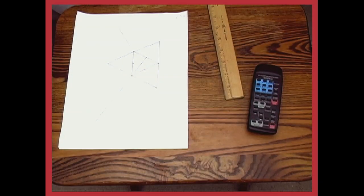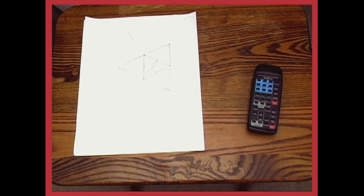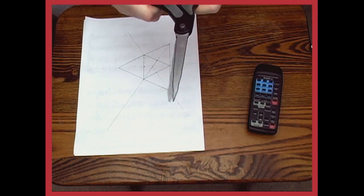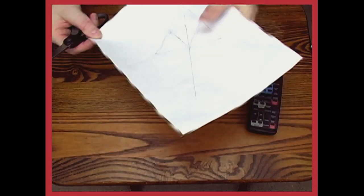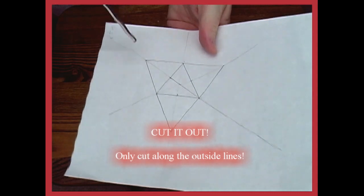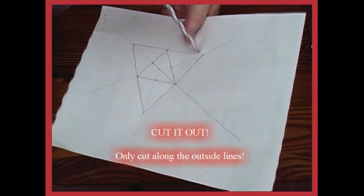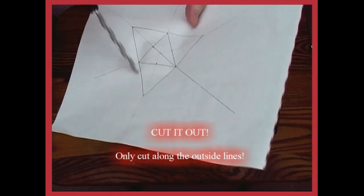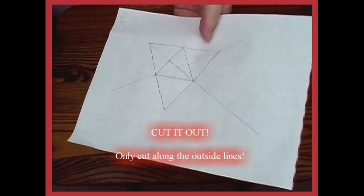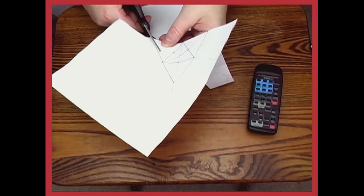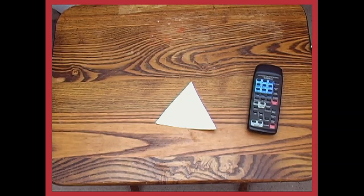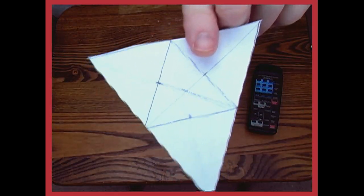So your end result should look something like this. That's the hard part, it's done. The easy part - grab your scissors. We just need to cut it out. Only cut the outside lines, one giant triangle here on the outside. Don't cut any inside lines. Now we have a triangle and it's got markings of other triangles on it.